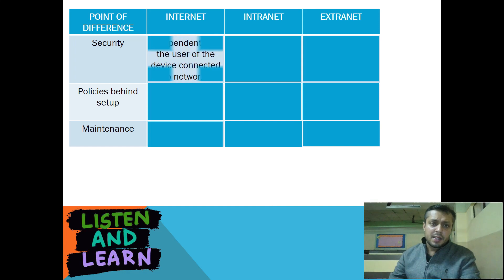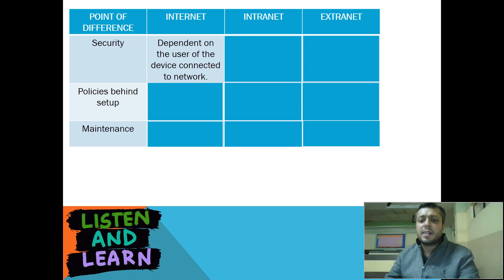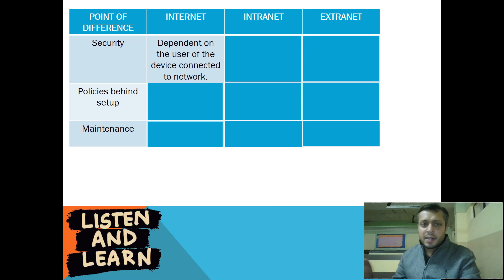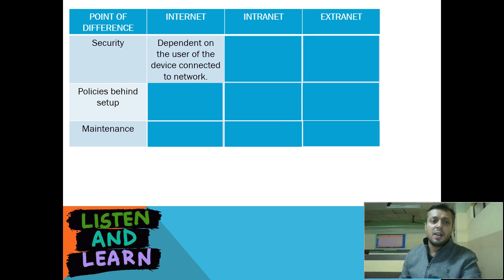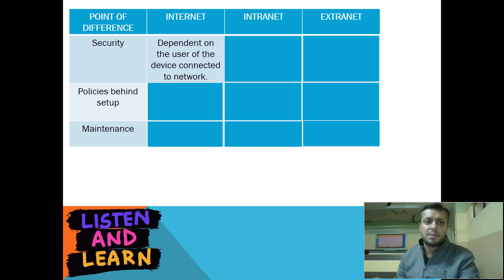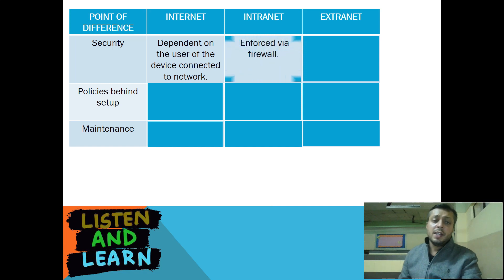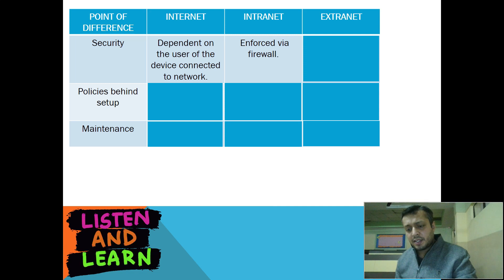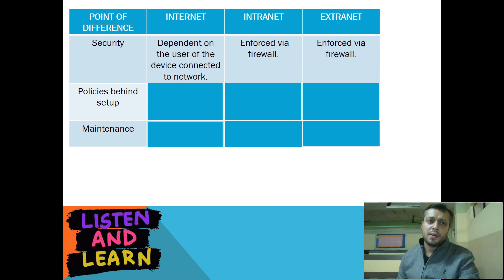Talking about the security of the internet, it depends on the user's device. For example, if you are connecting your device to the internet, there is no responsibility of the internet itself — there is good content, bad content, there might be trojans and viruses. This is the device owner's responsibility. So the security of the internet is basically not enforced. In intranet, security is enforced because the organization, being private, can keep a firewall. Same is the case with extranet.